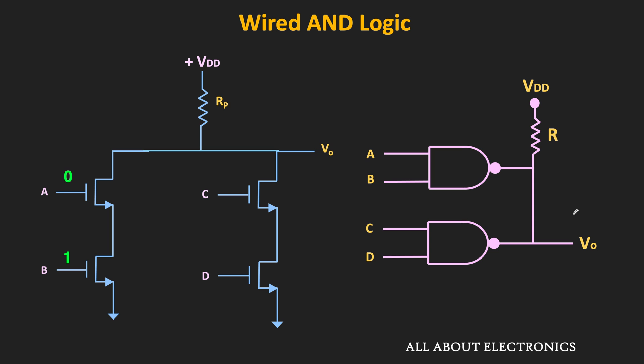For example, if A = 0, B = 1, C = 1, and D = 0, then transistors B and C will be ON while transistors A and D remain OFF, acting as an open circuit. For the pull-up resistor, since there is no direct path to ground, the voltage at this node will be the same as VDD — the overall output is logic high. So whenever all the outputs of the logic gates are 1, the overall wired output is also logic 1, and in this way the wired output acts as an AND gate.